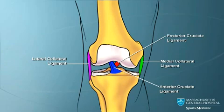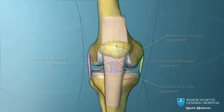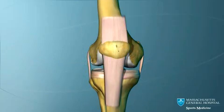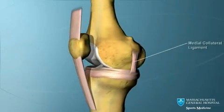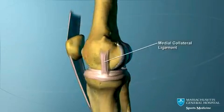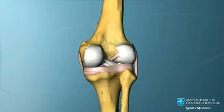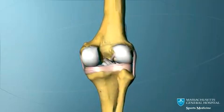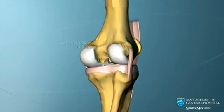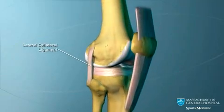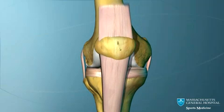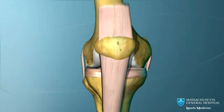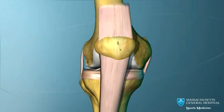There are four major ligaments that stabilize the knee. The medial collateral ligament is on the inner side of the knee, and the lateral collateral ligament on the outer side. The collateral ligaments give sideways stability to the knee.